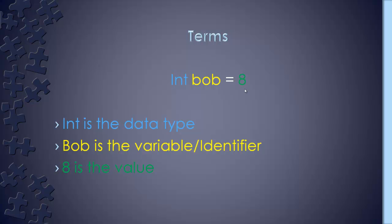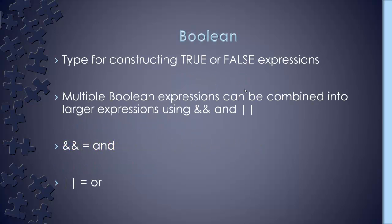When we get into loops, we typically use some kind of boolean expression — keep running this loop as long as this is true, or as long as this is not true. We can combine boolean expressions into larger expressions using the double ampersand or the double pipe. The double ampersand means AND, and the double pipe means OR. The pipe key is right underneath backspace. So we can have big long boolean statements if we really need to.